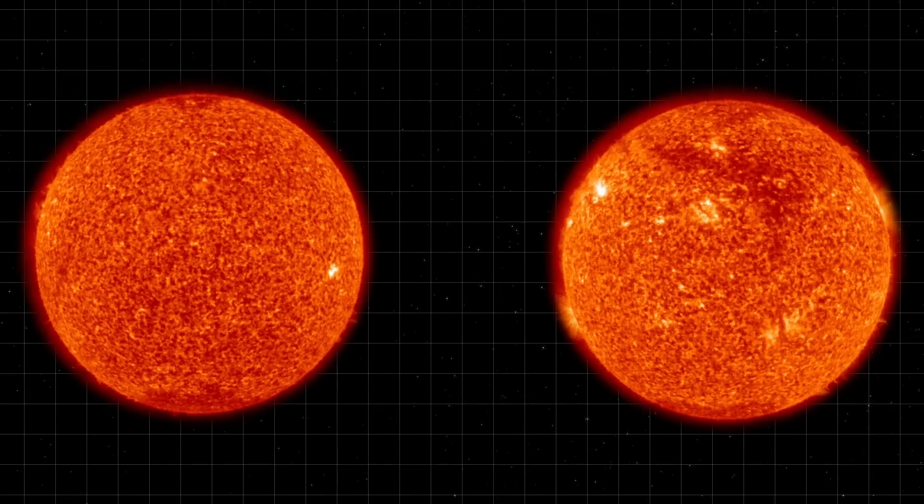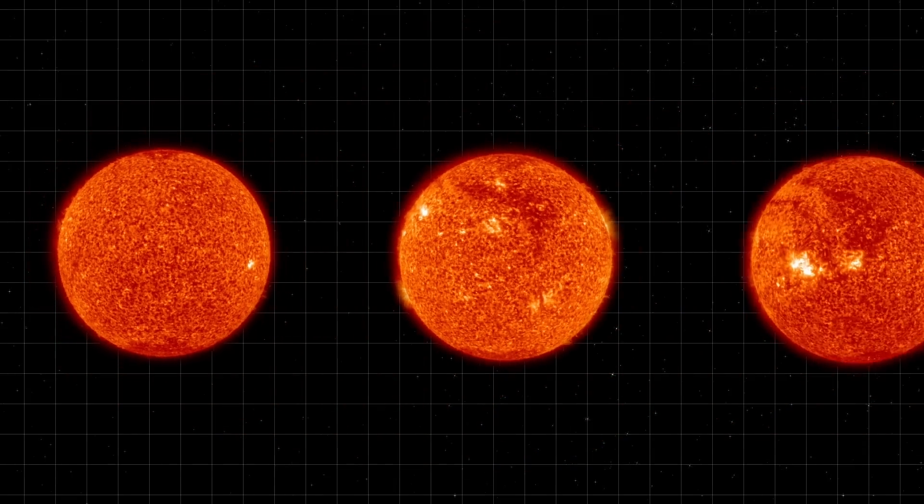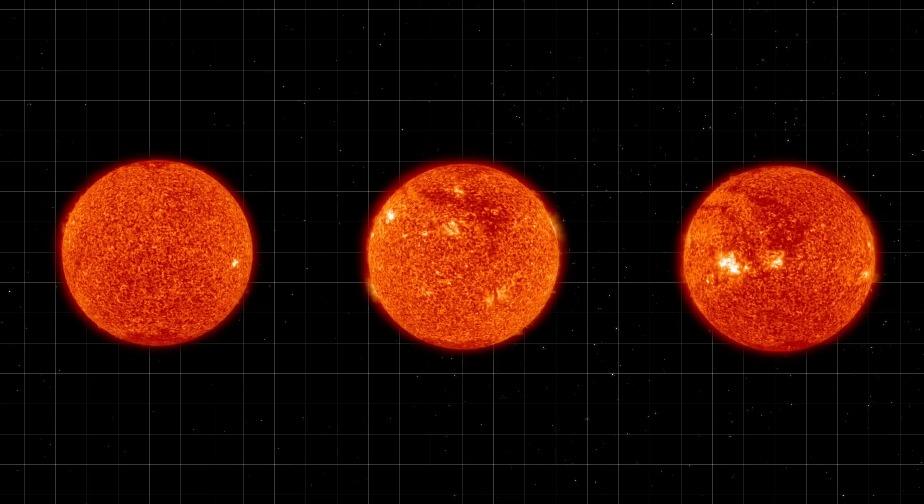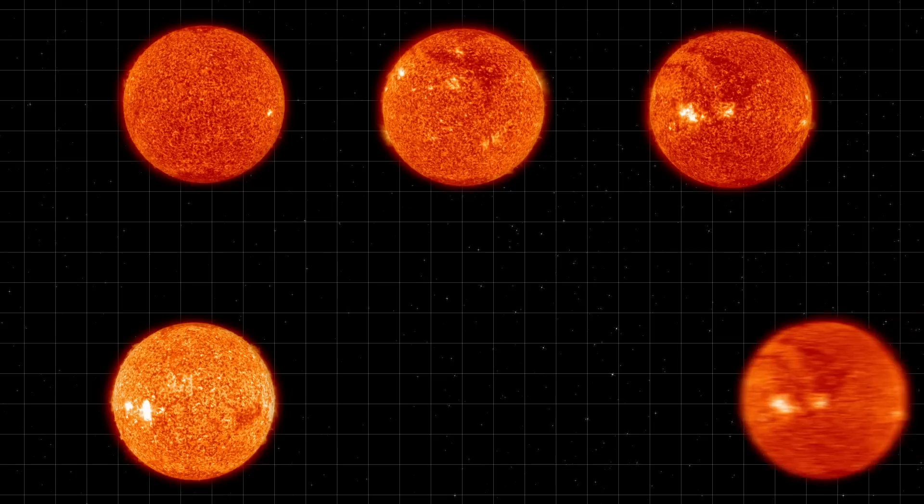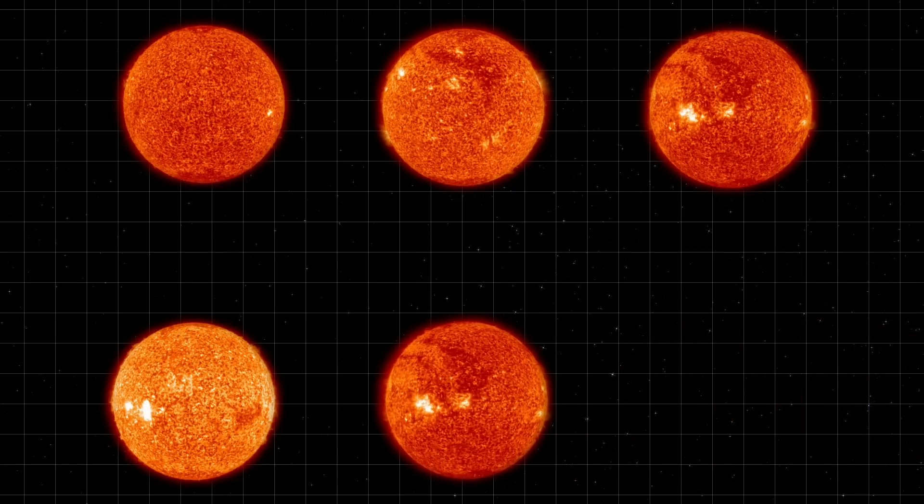As the cycle progresses, the number of sunspots increases. Sunspots are regions of intense magnetic activity and are associated with the emergence of magnetic flux from the Sun's interior. These sunspots appear in pairs with opposite magnetic polarity and migrate towards the equator over time.